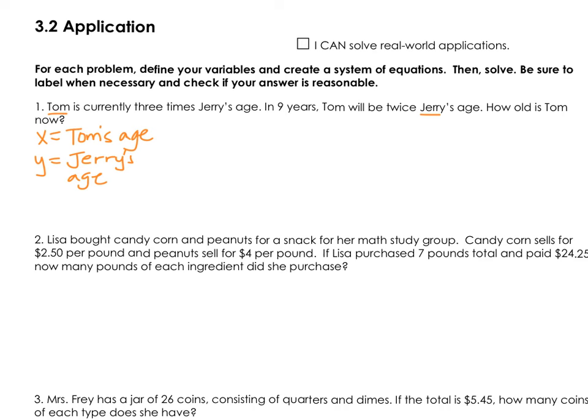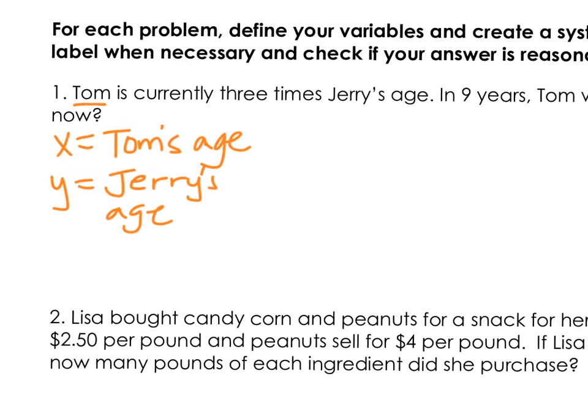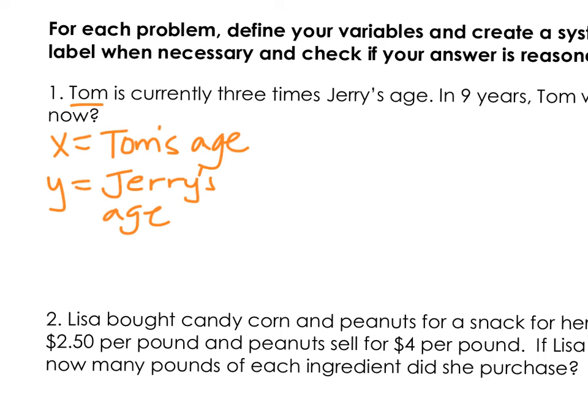To create a system, we need two separate equations. In the first sentence, it says Tom is currently 3 times Jerry's age. The key focus are some of the words in the sentence itself. When it says Tom is, 'is' is going to be a separator from one side of the equation to the other. So 'is' is like an equal sign. Tom has assigned the variable x. It says currently 3 times Jerry's age, so 3 times y. That's one of our equations then: x equals 3y.